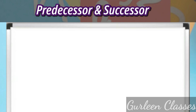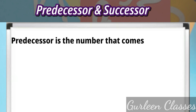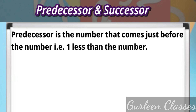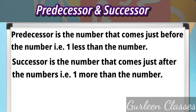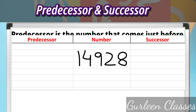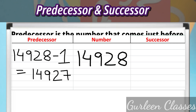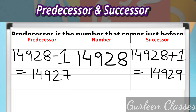Last topic for today: predecessor and successor. Predecessor is the number that comes just before a given number — that is, one less than the number. Successor is the number that comes just after the number — that is, one more than the number. Example: take the number 14,928. Predecessor of 14,928 equals 14,928 minus 1, which is 14,927. Successor of 14,928 equals 14,928 plus 1, which is 14,929.